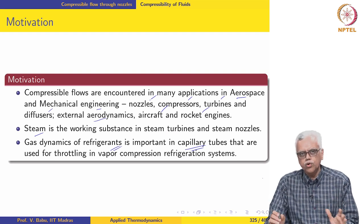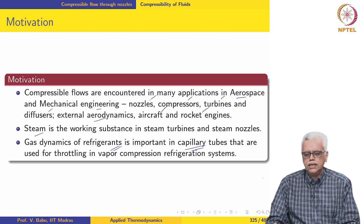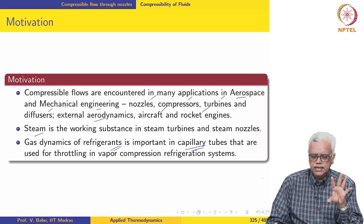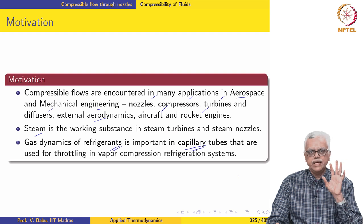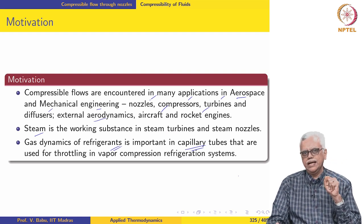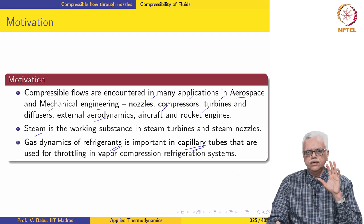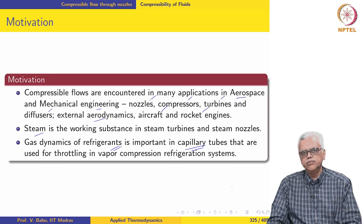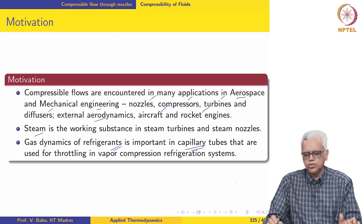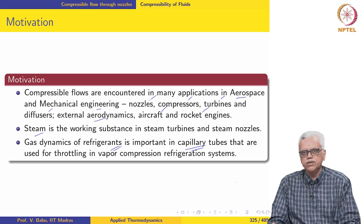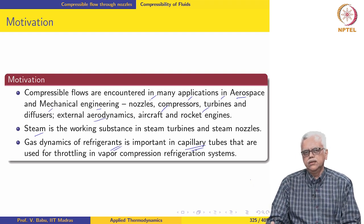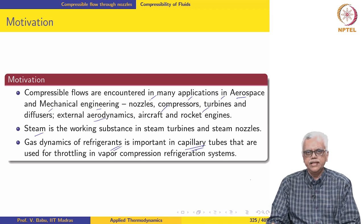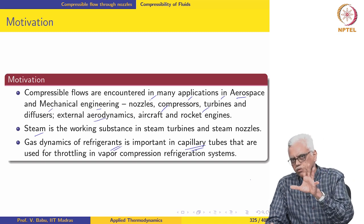The scope of this module will be confined to flow through nozzles, because flow through turbomachinery blade passages, nozzles, or diffusers can all be categorized into a simple quasi one-dimensional flow category. Once we learn quasi one-dimensional flows, or flow through varying area passages, we would be able to apply this to most of the applications for a first-cut analysis, which is usually very adequate. So our scope is to look at flow through nozzles or passages of varying area of cross section.